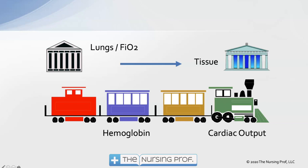We can control many of these different components. For example, if there's not enough oxygen getting to the lungs, we can increase the FiO2 — the amount of oxygen going to the patient. The hemoglobin is a little bit more difficult to manipulate, especially in a patient who is losing hemoglobin because they have bleeding or hemolysis or some other issue. We'll talk about that in just a moment.